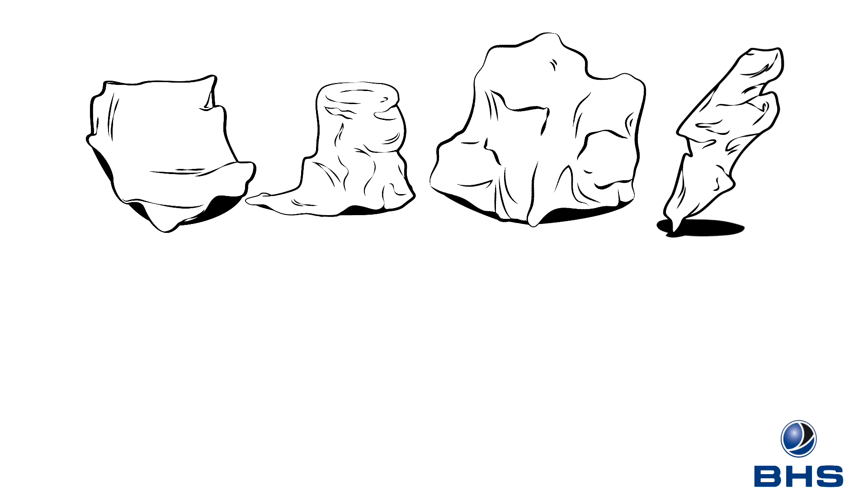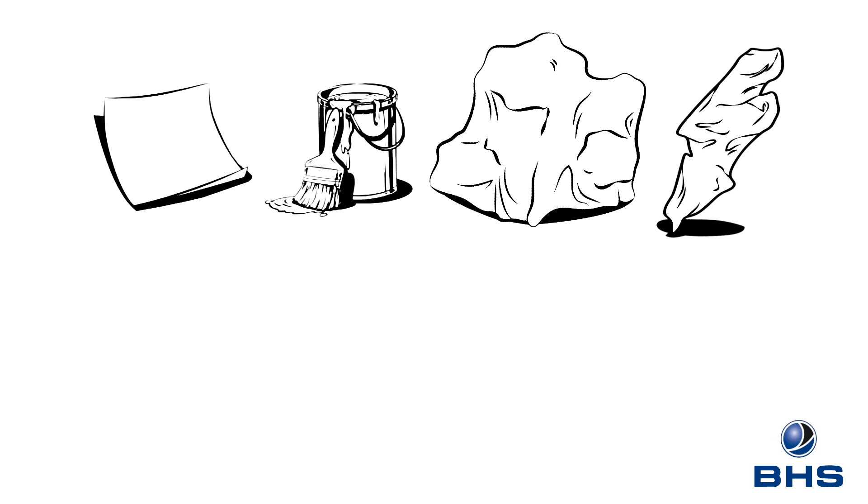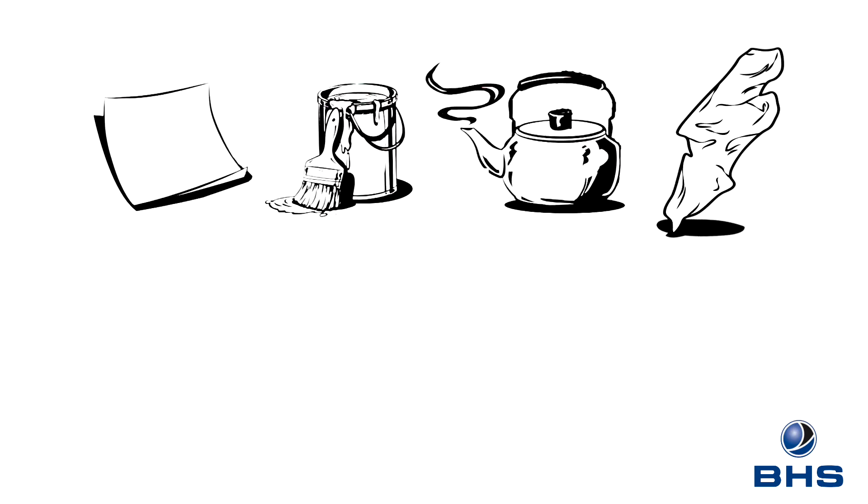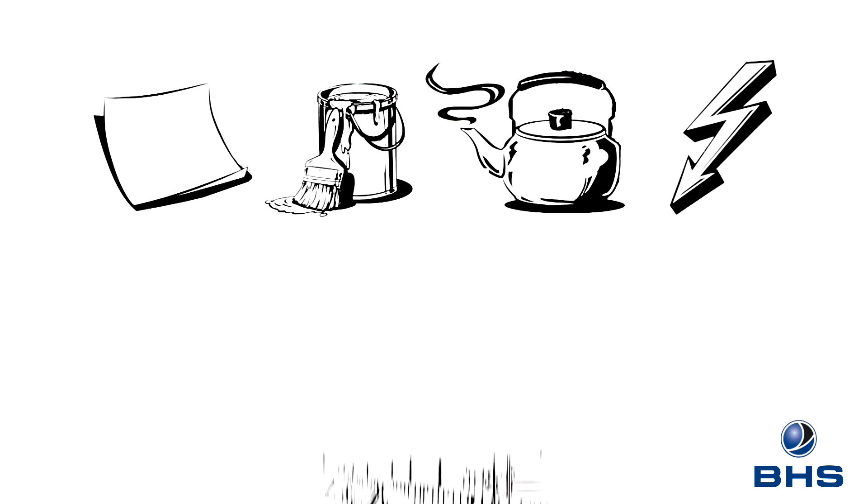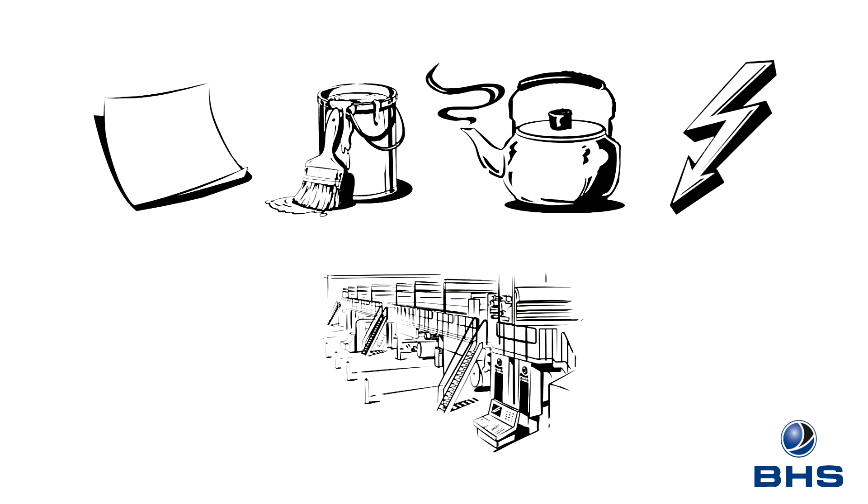So what is it we need to manufacture corrugated board? Actually, this requires only paper, starch, glue and energy in the form of steam, as well as electricity. And, of course, a corrugator from the market leader BHS Corrugated from Bavaria in Germany.